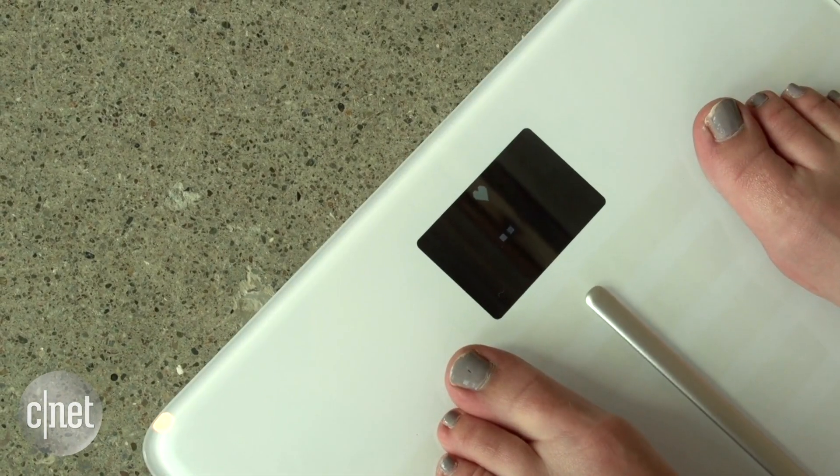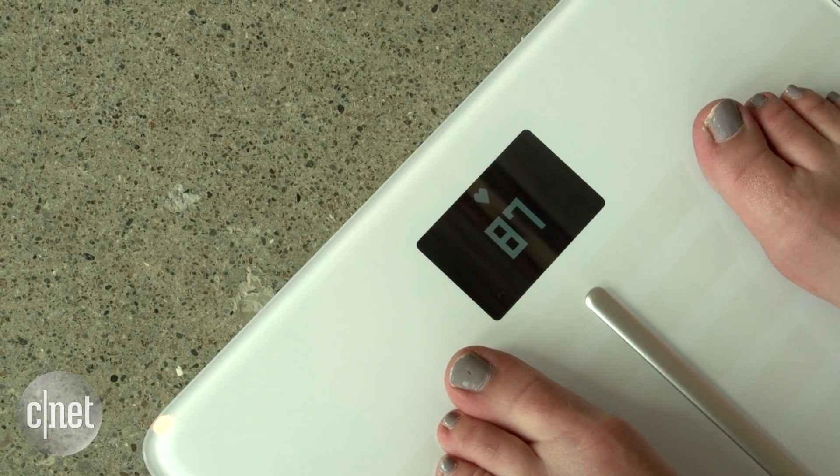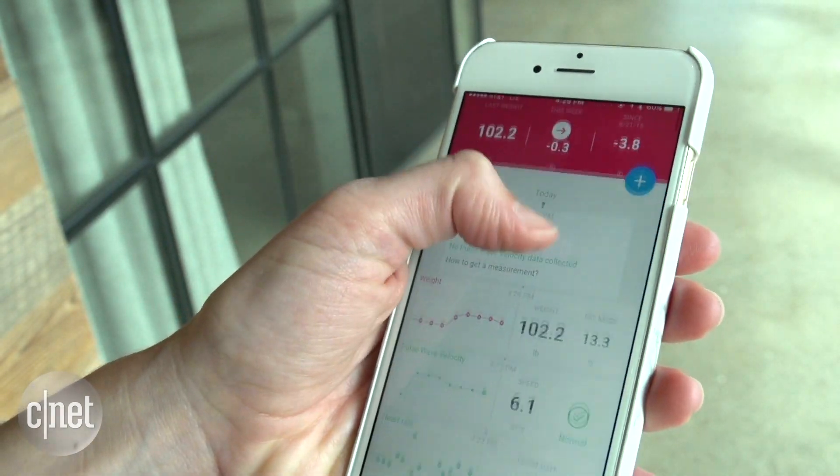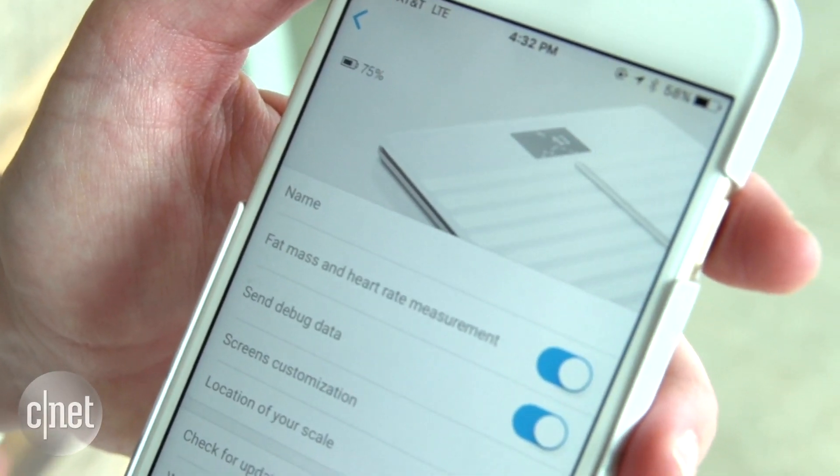And it does a third thing too—it will measure your heart rate and your heart health. All this data comes to your phone and helps you track health stats over time like your muscle to fat ratio.